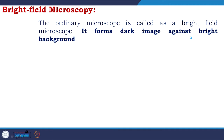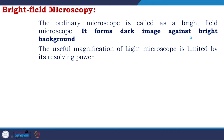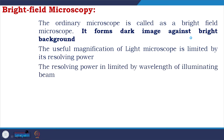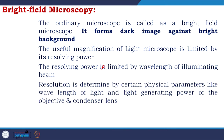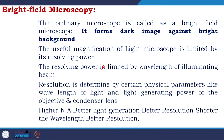The ordinary microscope is called a bright field microscope — it forms a dark image against a bright background. The useful magnification of a light microscope is limited by its resolving power, which is limited by the wavelength of the illuminating beam. Higher numerical aperture gives better light gathering and better resolution; shorter wavelength also gives better resolution.